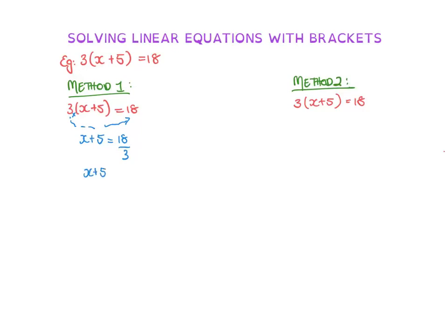And then I'm going to fix that up. So 18 divided by 3 is 6. And then I'm going to move the 5 to get the x by itself. So the opposite to adding 5 is subtracting 5. So x equals 1. Okay, so that was the first method.